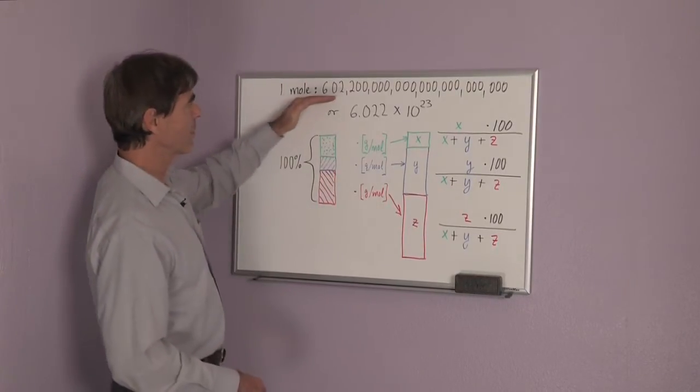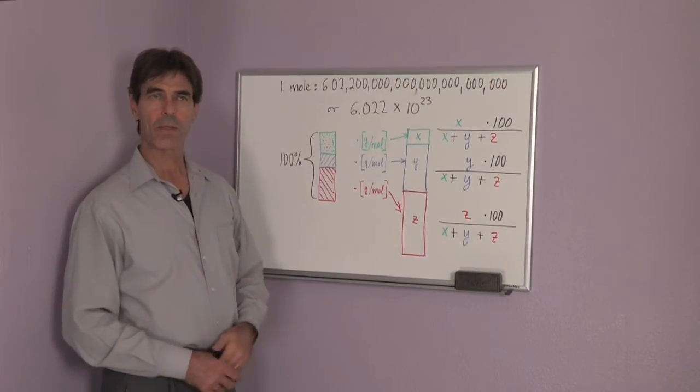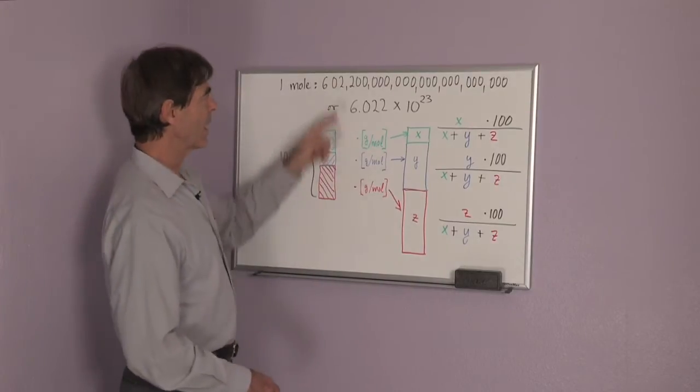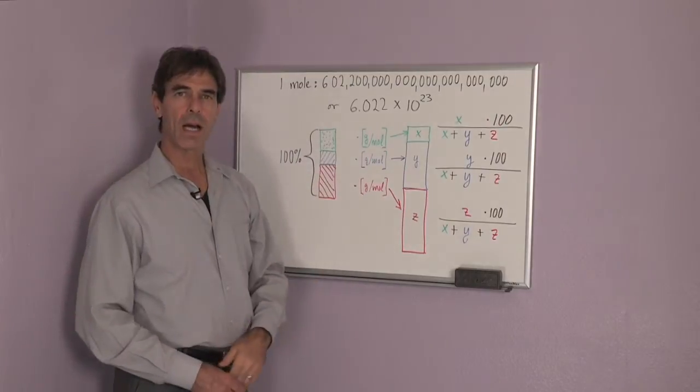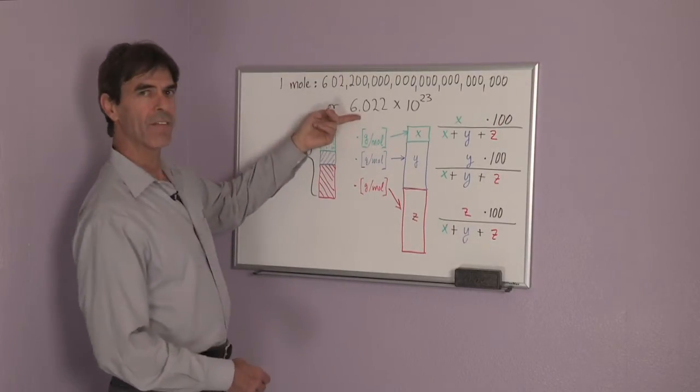That's a very big number—this is six zero two two and then I have another 20 zeros. So I've rewritten that number, one mole, in scientific notation.